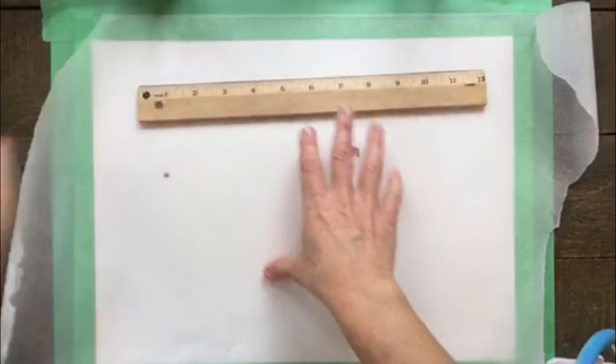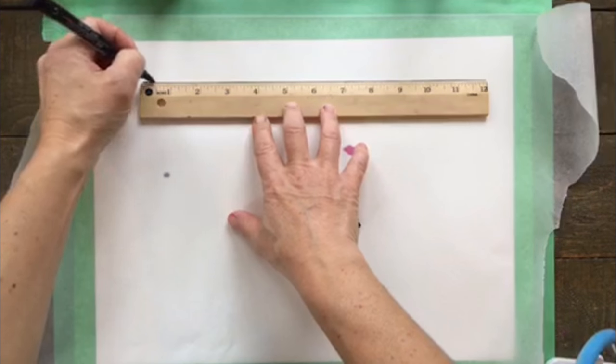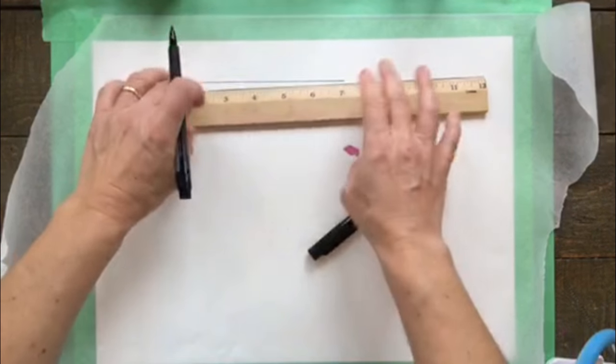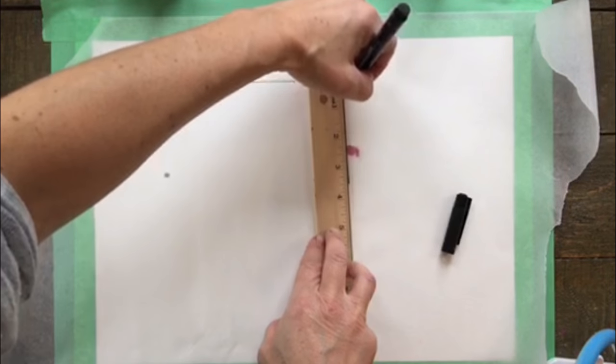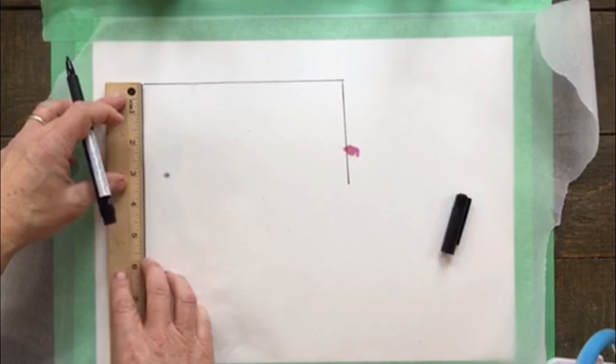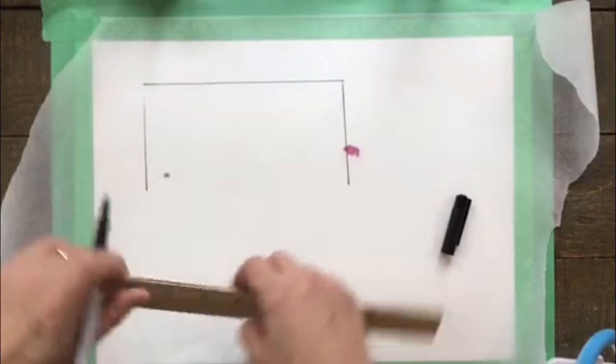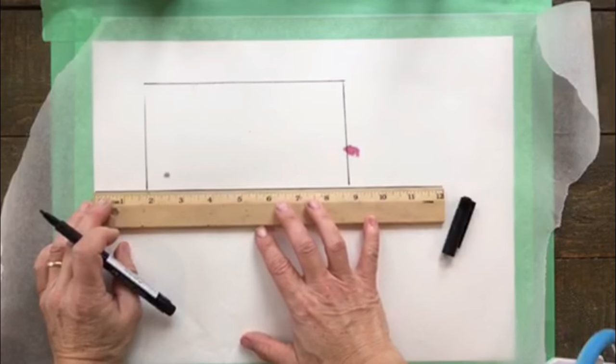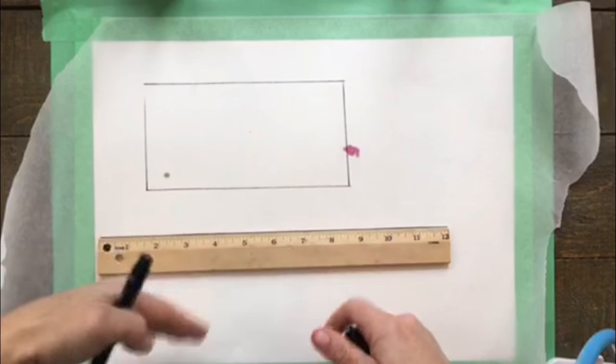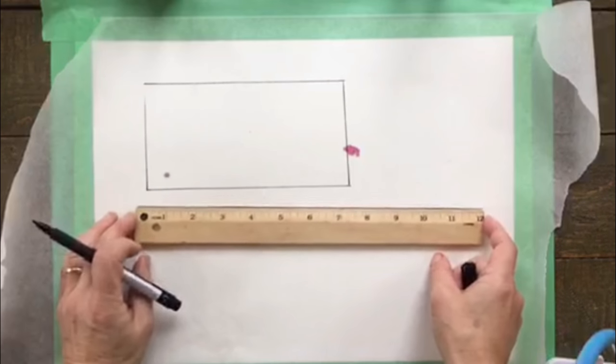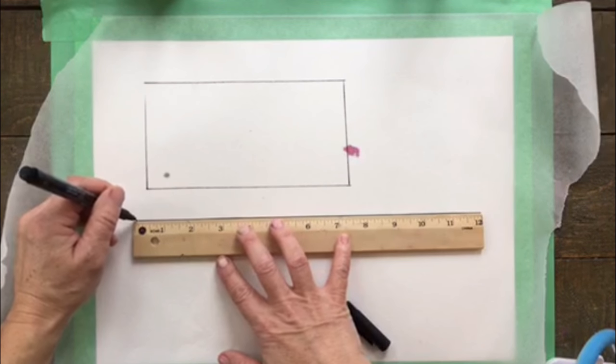So all I'm going to do here, so I know how much resin to spread, is I'm just going to mark across, so 7 by 3 and a half. It doesn't have to be perfect. In fact, that was a really bad line that I just drew there. But anyway, it's just more of a guide so you know where to sort of keep the resin. So I'm going to go ahead and just finish marking all of these out because I have three glasses that I'm going to be doing.